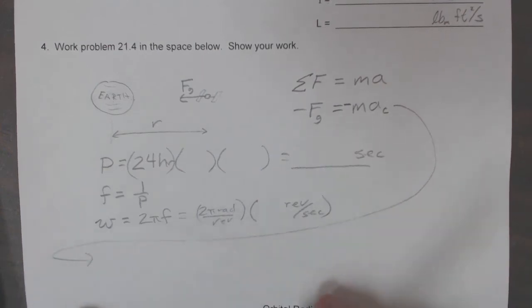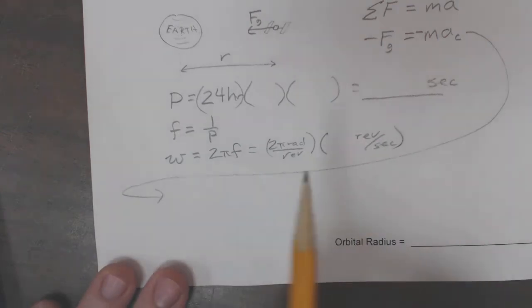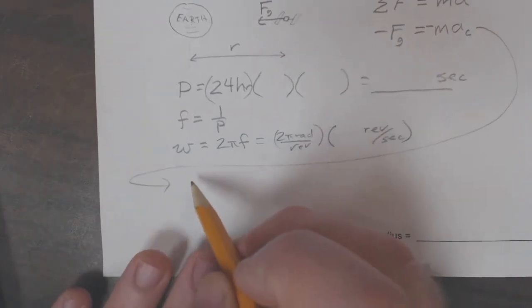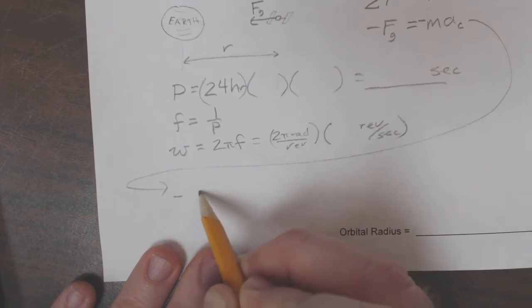Alright, I need a little room to work the rest of this. So what I need to do is write down what the force of gravity is between two masses. Now that turns out to be, in the case of F_g right there, I got the minus sign, capital G.